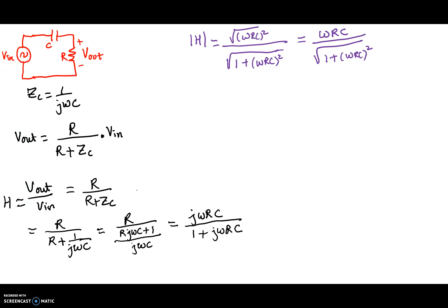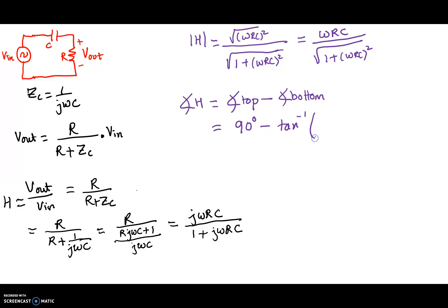That is the magnitude of the transfer function. For the phase angle of H, it equals the angle of the top minus the angle of the bottom. The angle of the top has no real term, only an imaginary term, so it is 90 degrees. The angle of the bottom has both real and imaginary terms, giving arctan(ωRC / 1). So the phase angle is 90 degrees minus arctan(ωRC).